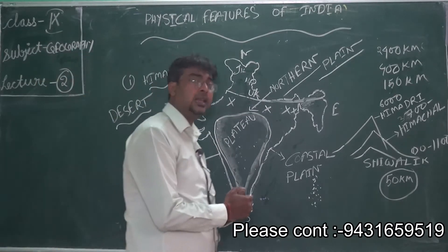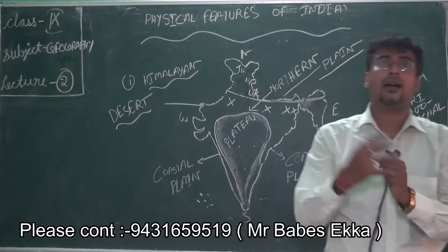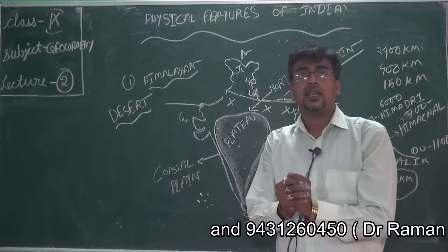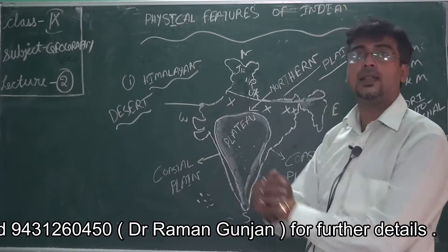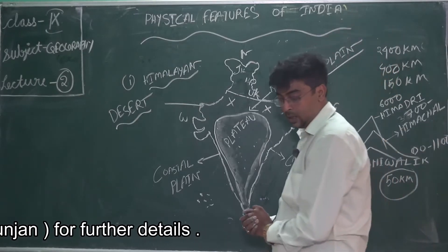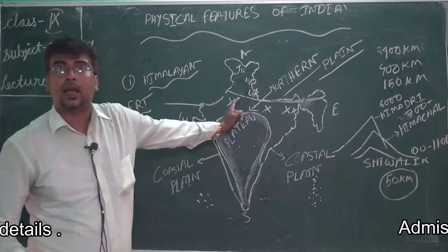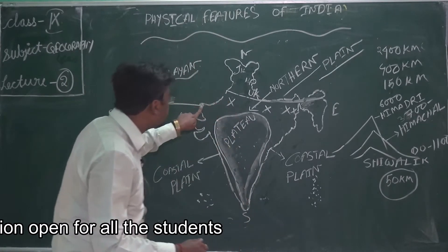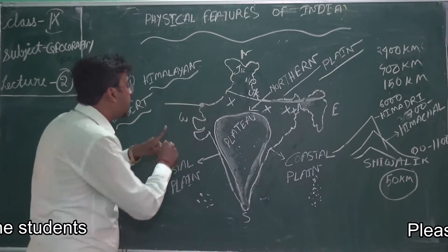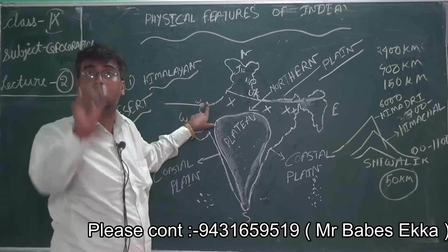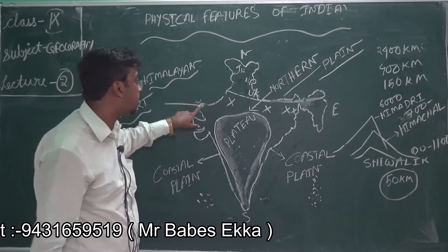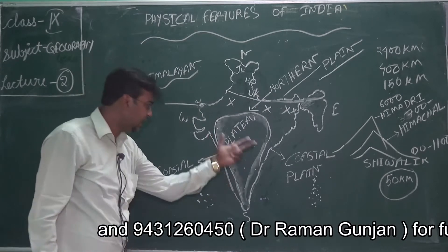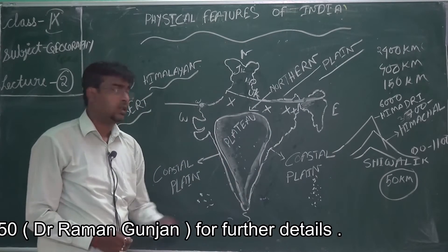I ask many students — if we ask the question, what is the Indian desert? Many students say that Rajasthan is the Indian desert area — that is a wrong answer. That is not all of Rajasthan. Rajasthan has big cities like Jaipur and Jodhpur. It is the western Rajasthan, specifically Jaisalmer, that is the desert area. So our India also has a desert.